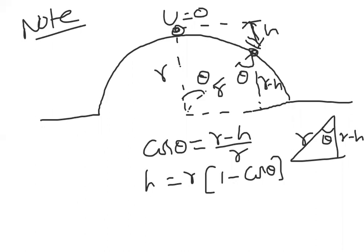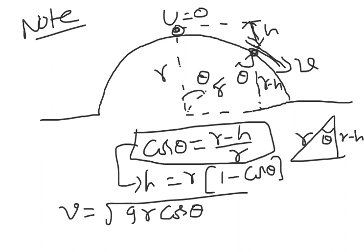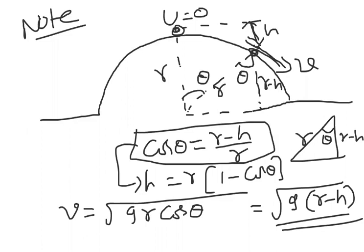With r cos θ = r − h (when h is measured from the top), substituting into v = √(gr cos θ) gives v = √(g(r − h)). So: if height is given from the ground to the point, v = √(gh); if height is given from the top down to the point, v = √(g(r − h)). This is the velocity at which the object loses contact with the convex road.